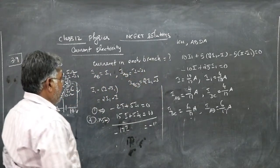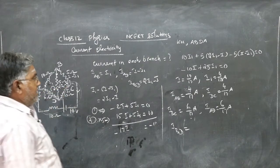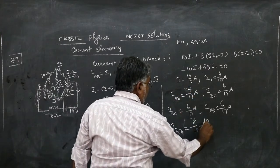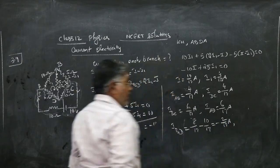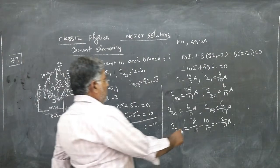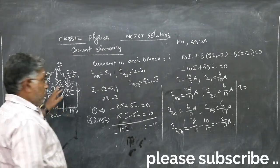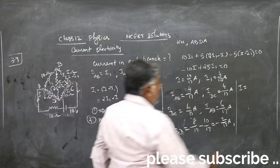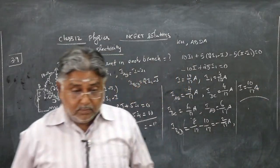Current through branch BD: IBD = 2I1 − I = 8/17 − 10/17 = −2/17 ampere. The negative sign indicates current flows in the direction opposite to our assumed direction. The total current through the external 10 ohm resistor outside the Wheatstone's bridge is simply I = 10/17 ampere. Hence the answer for all branch currents is found. Thank you.